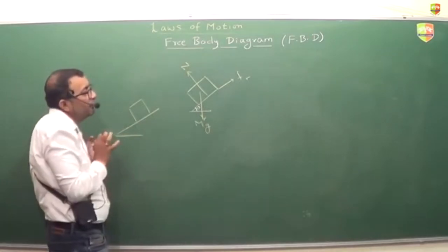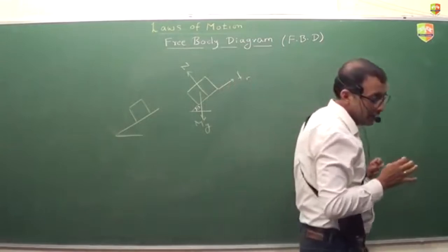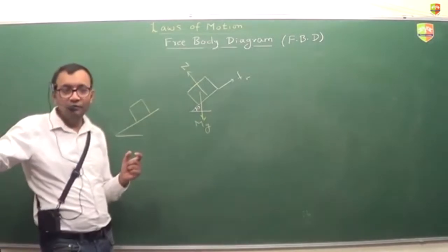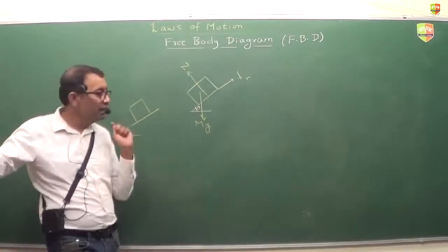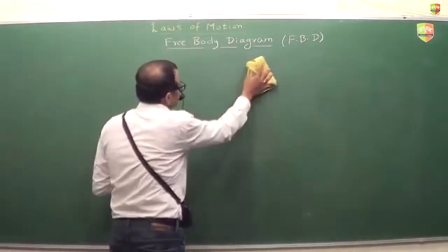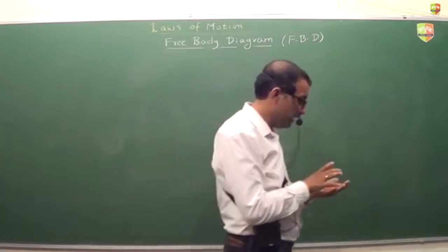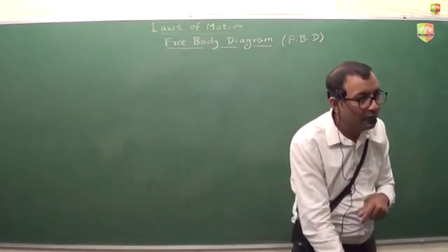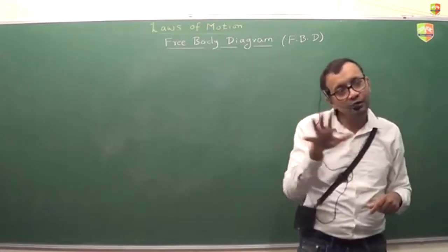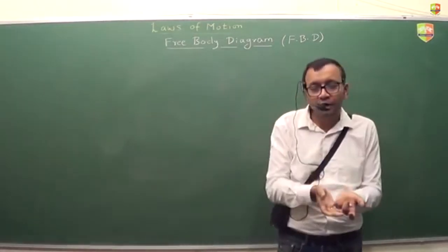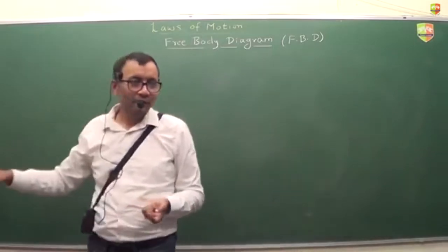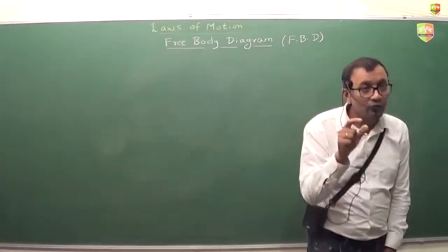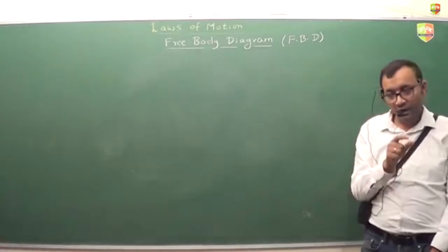We will be drawing free body diagrams of various cases. Once you draw the free body diagram, you can apply Newton's second law: F equals mass times acceleration. The first step in drawing a free body diagram is to identify the object for which you are drawing it. Step number one: find out which object you are drawing the forces on.